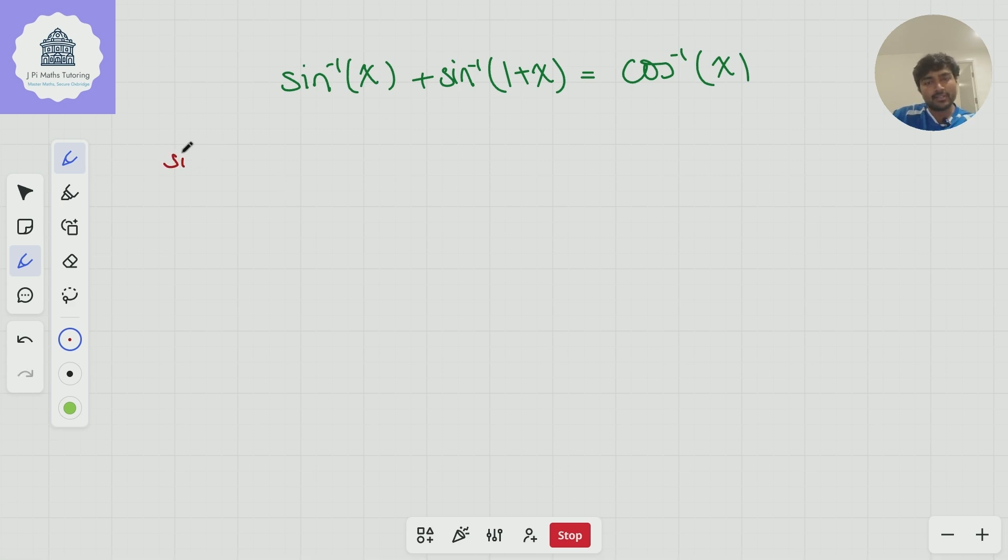So let's start with inverse sine. So we know that inverse sine has a domain and a range. The domain of inverse sine is minus 1 to 1 and the range is minus pi over 2 to pi over 2. What about for inverse cos? Well, the domain is also minus 1 to 1, except the range now is 0 to pi.